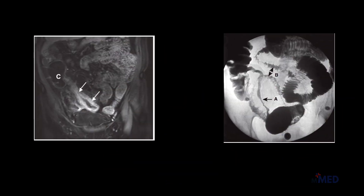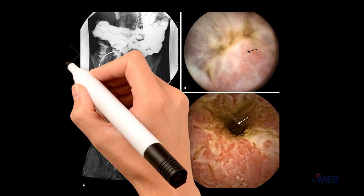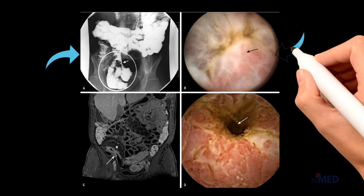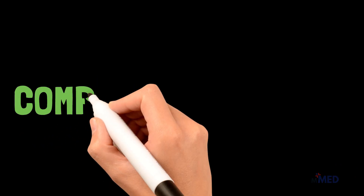A barium follow-through showing terminal ileal Crohn's disease reveals strictures causing intestinal obstructions — known as the characteristic string sign. Additional imaging shows an ulcerated stricture with pre-stenotic dilation, an endoscopy picture of an ileal ulcer, bowel wall thickening of the terminal ileum with active inflammation, and a capsule endoscopy showing an ileal Crohn's disease stricture.